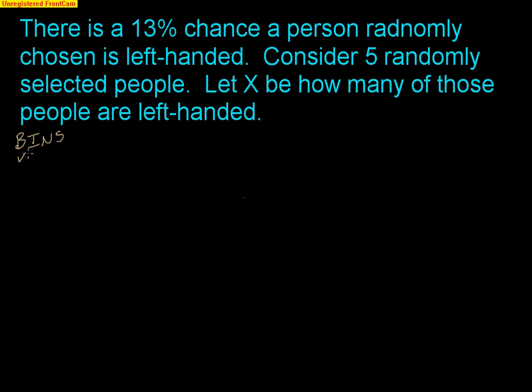B stands for binary. There are two things that can happen — you can be left-handed or you cannot. Success is being left-handed. Failure is everything else, being not left-handed. Independent: I have to assume that one person being left-handed is not going to affect the next person being left-handed, so I should have independence.